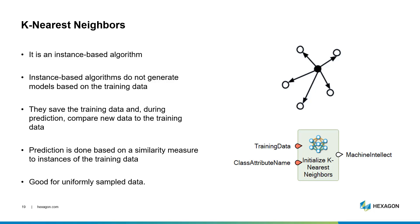Now let's jump into some of the machine learning algorithms that are out there. First is K-Nearest Neighbors, or KNN. This algorithm assumes that similar things exist in close proximity with one another. It's an instance-based algorithm, meaning that it does not generate models based on the training data. It saves the training data information, and when doing the prediction, it compares the new data to the training data to actually make the prediction. It's really good for uniformly sampled data.